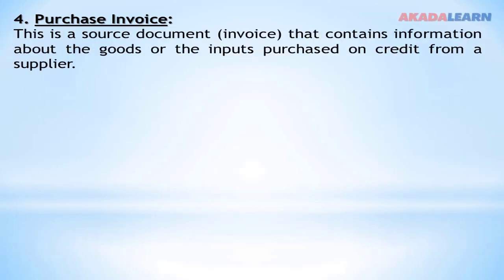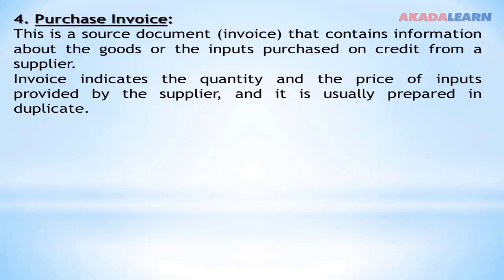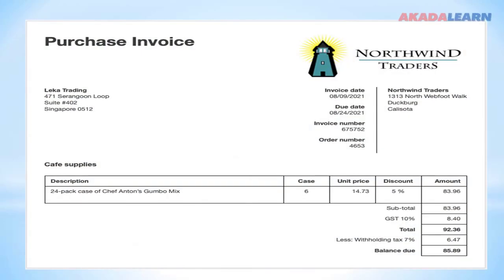Purchase invoice. The purchase invoice as a source document contains information about the goods or inputs purchased on credit from a supplier. The invoice indicates the quantity and price of inputs provided by the supplier and is usually prepared in duplicate. It contains names and addresses of the supplier with product description. The purchase invoice is almost like the sales invoice, but the difference is that a purchase invoice is given when something is bought on credit.